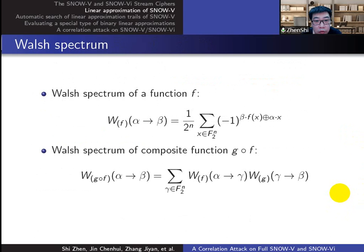For the approximation of a composite function, we can compute the correlation by the widely used Welch spectrum theory. It is worth noting that the input variables x in this formula must be mutually independent and uniformly distributed.